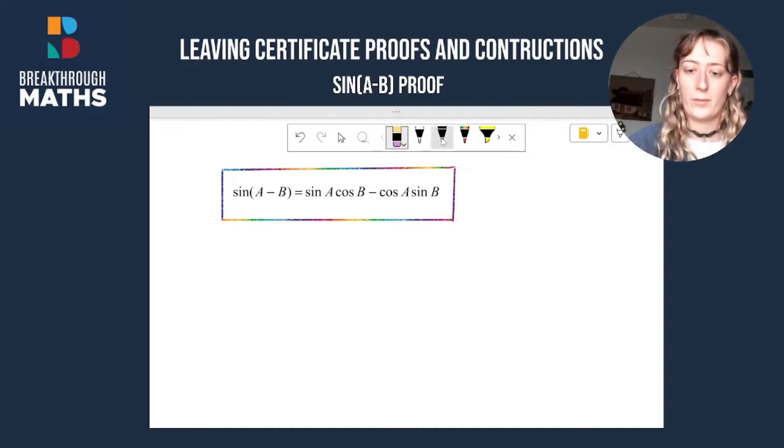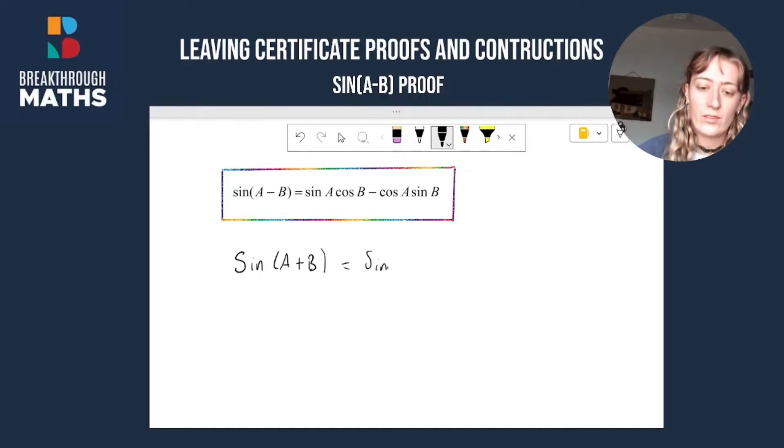Okay, let's get into it. So the first thing we're going to do is we're going to write down the formula for sine A plus B. Now you'll find this in your log tables, you can also find a step-by-step proof for this on the same channel. So sine A plus B is equal to sine A cos B plus cos A sine B.